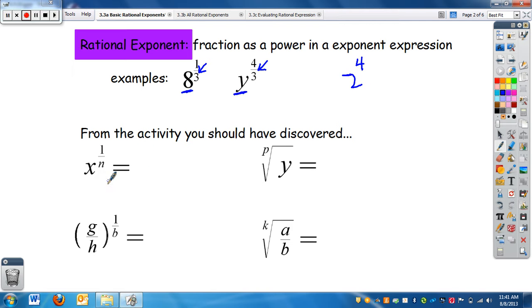From the activity, you should have discovered that if I have x to the 1/n, well if I want to write this as a root, the n is your index, the x is your radicand. The question is, where does the 1 go? The 1 is actually the exponent right here.